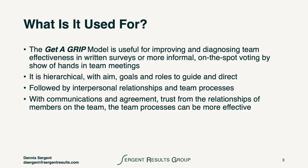We use the Get-A-Grip model to improve and diagnose team effectiveness in written surveys initially. After lots of practice, we have an opportunity to move to more informal use of the tool, because once we've gotten familiar with on-the-spot voting, we can show our hands in team meetings, and this works even in the virtual world. It is very hierarchical, with the aim, the goals, and the roles questions guiding and directing our thinking as we then talk about and score the interpersonal relationships and the team processes.